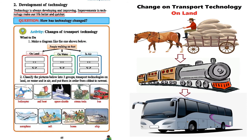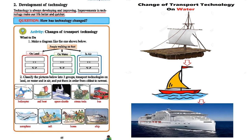For waterways, there are three technologies: the raft, the sailing boat, and the ship. All three are used in waterways. In ancient times humans used the raft for transportation on water. Then they invented the boat with a sail — with the help of wind, a boat could move from one place to another quickly. The sailing boat is the upgraded version of the raft. Then we invented the ship, with which we can go from one country to another by waterway. So the improvement goes from raft to sailboat to ship — that is the change of waterways transport technology.